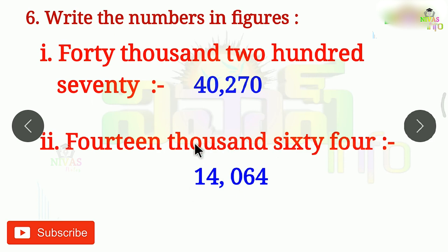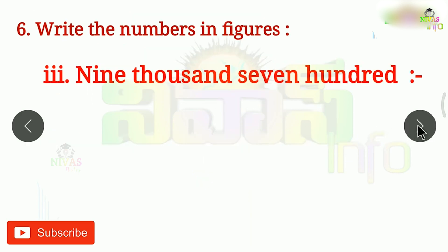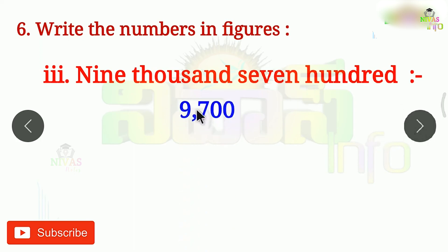If you use 1,064, you will need to handle the missing 100s place. If you miss the tenth place, then you will miss one place. The next problem is 9,700.